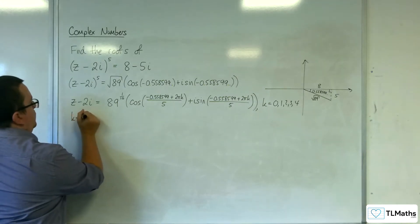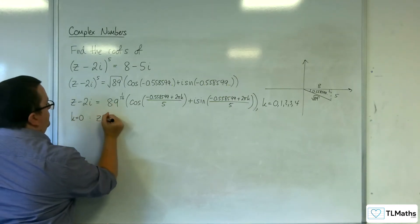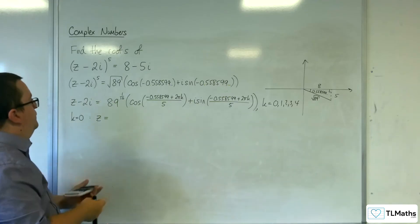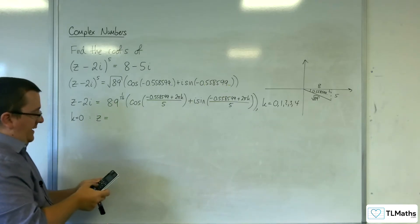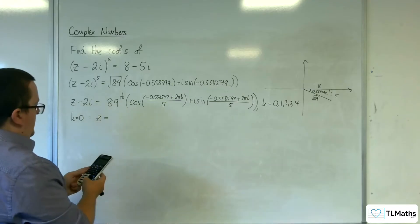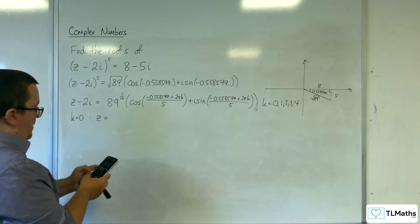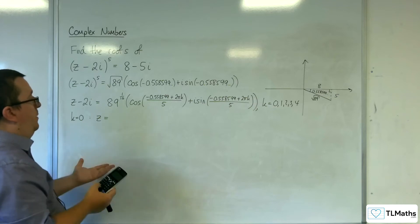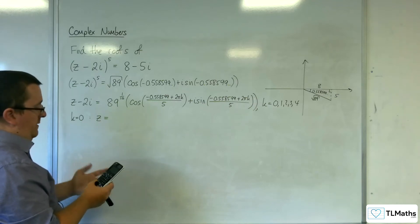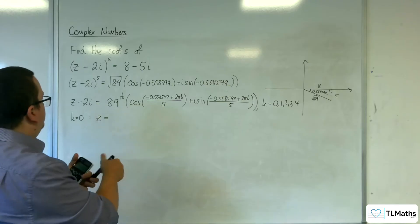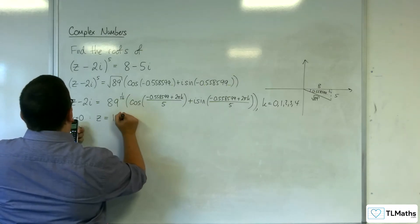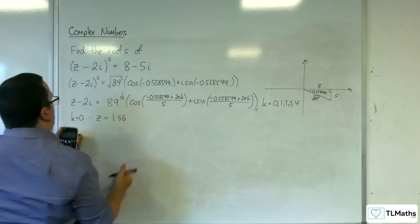So when k is equal to 0, z is going to be equal to... So we've got 89 to the power of 1 over 10, and we're going to times that by cosine of minus 0.558599 plus 2pi k. K is 0, so just that, and divide by 5. So we get 1.56 to three significant figures.